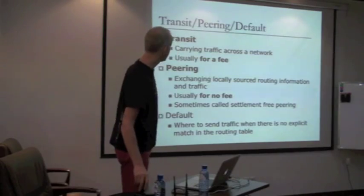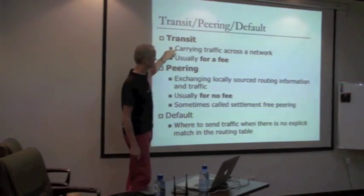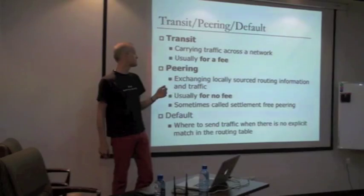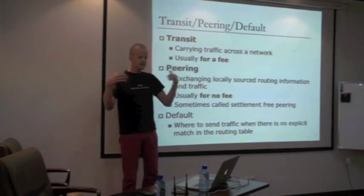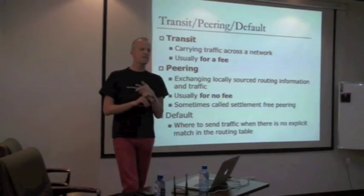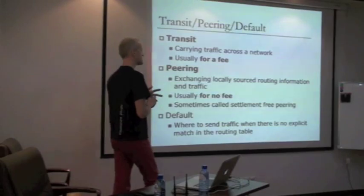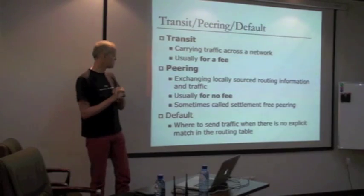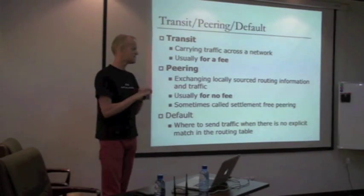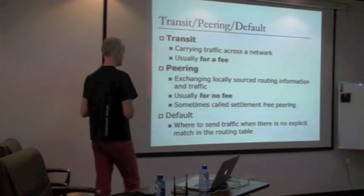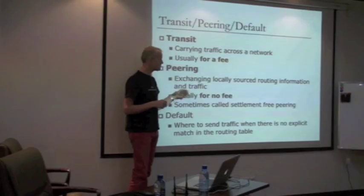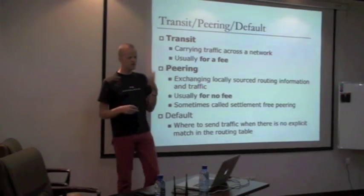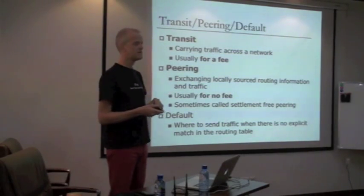Transit and peering are the defaults. Transit means carrying traffic across a network for a fee - transit providers charge you money to get access to the rest of the internet. Whereas peering means ISPs interconnect their networks to avoid having to pay transit providers for traffic, to improve quality of service, and to improve round-trip times locally. Peering is very, very important, especially between competing ISPs - it's how the internet exists. Peering is done for no fee - some people call it settlement-free peering.